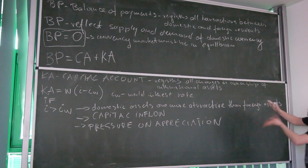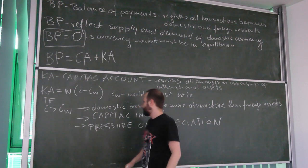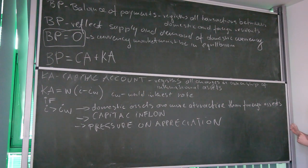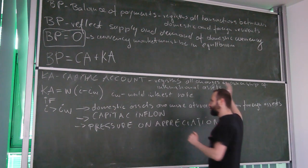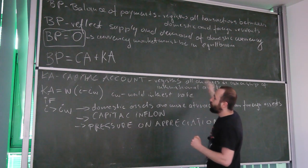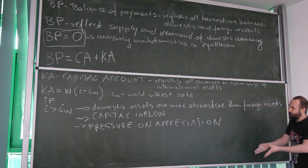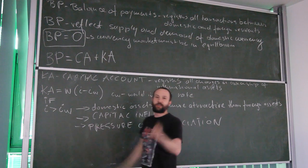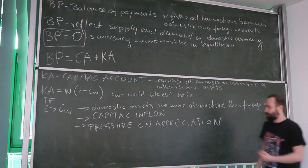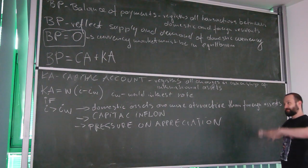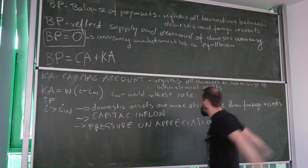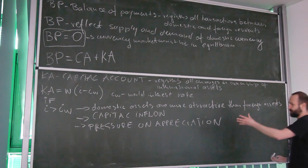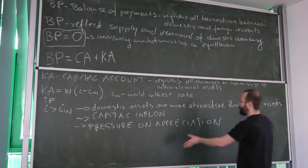To summarize: if our interest rate is higher than the world interest rate, our assets are more attractive than foreign assets. Foreigners want to buy our assets, but our assets are denominated in our currency, so they need to purchase our currency. Higher demand for our currency creates pressure for appreciation.